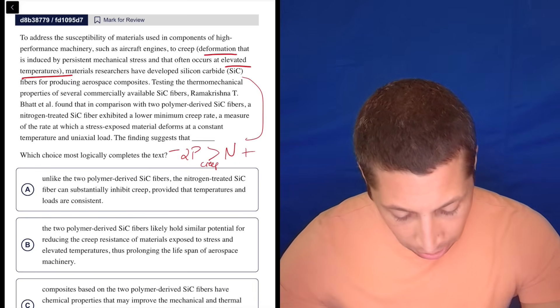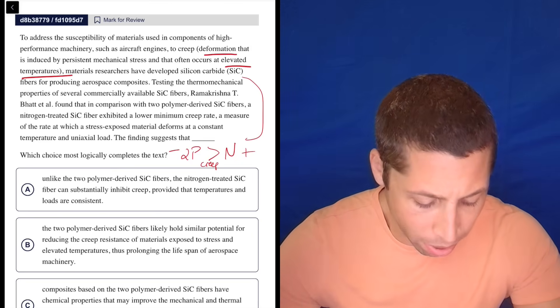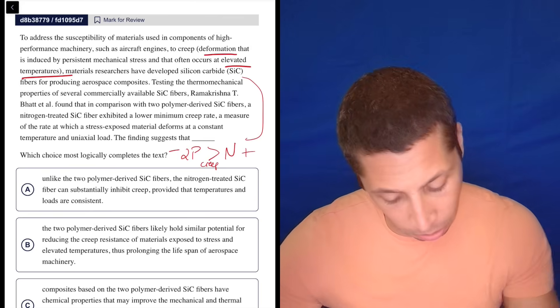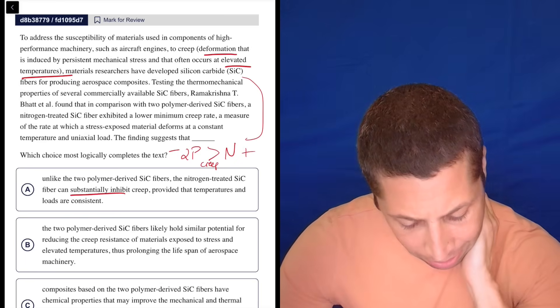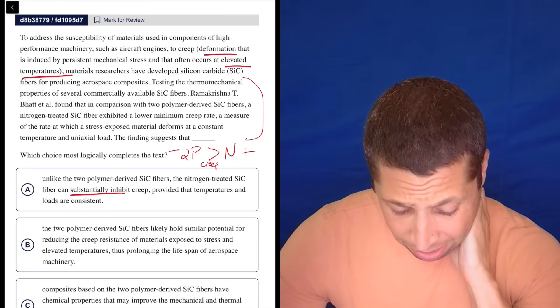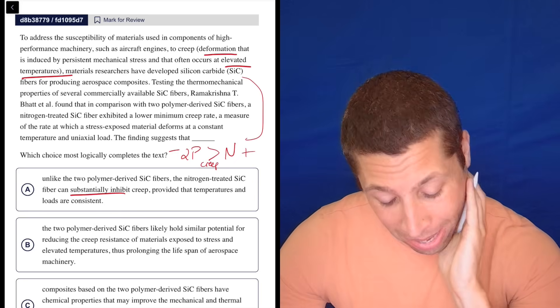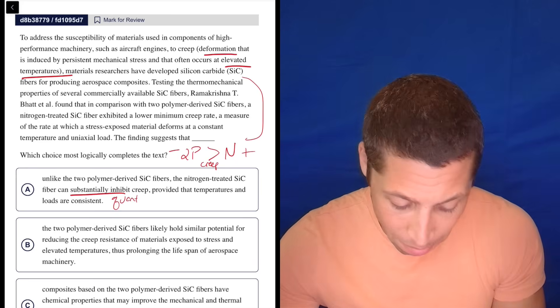This finding suggests that unlike—oh boy, I already can tell this is gonna be all twisted—unlike the two polymer-derived SiC fibers, the nitrogen-treated SiC fiber can substantially inhibit creep, provided the temperatures and loads are consistent. It said it's better, but 'substantially inhibit'—that's a quantifier. I don't know, maybe I'm being too picky. Let's look at B.